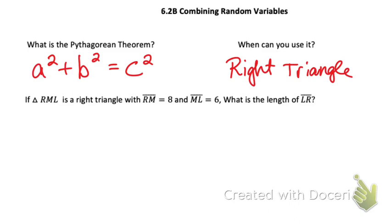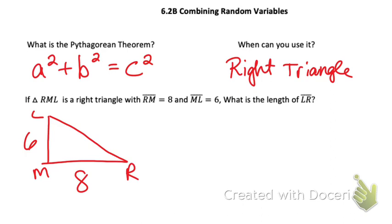The answer is 10 — it's a Pythagorean triple. But how do we know for a fact that the hypotenuse is what we're looking for, and not one of the given sides? It's in the way the triangle is written: the middle letter M is always the right angle in a right triangle.